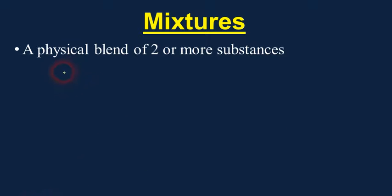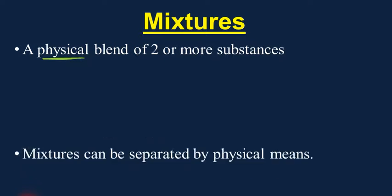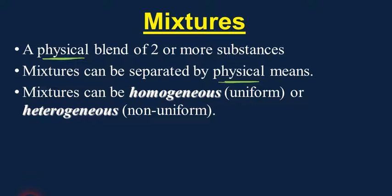Now, speaking of mixtures, let's talk about those briefly. Mixtures are physical blends of two or more substances. Earlier we said that compounds are chemically fused together — well, mixtures are physically mixed or physically blended together. As a result, since they're physically blended, you can separate them by physical means. We can talk about two types of mixtures: homogeneous mixtures and heterogeneous mixtures.